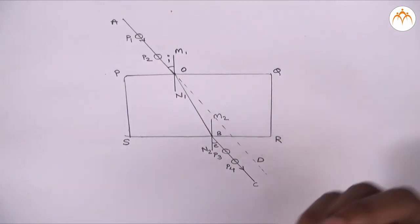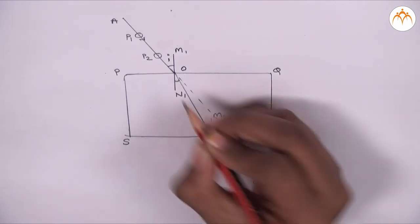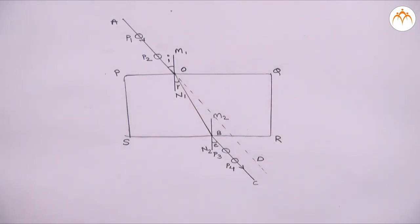AD and BC are parallel to each other. The angle N1 OB is angle of refraction and is denoted R. We have three angles with us.